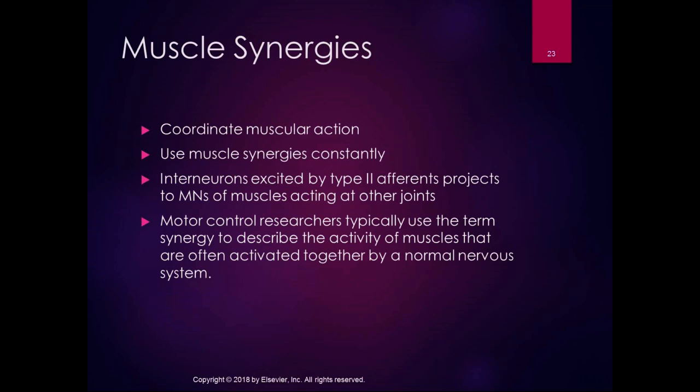Abnormal muscle synergies usually involve upper motor neurons, while normal muscle synergies involve lower motor neurons. In the clinic, you'll often hear muscle synergies referred to as the abnormal ones, but here we're talking about normal muscle synergies that act together to produce function.